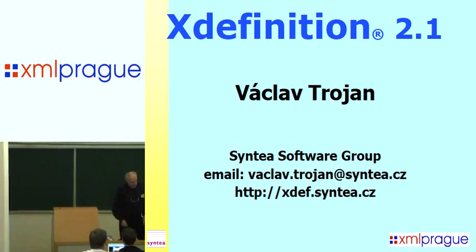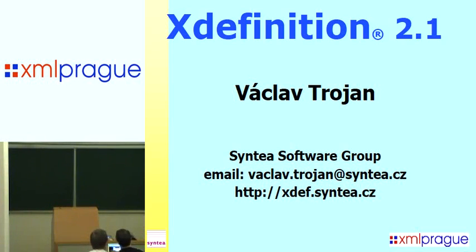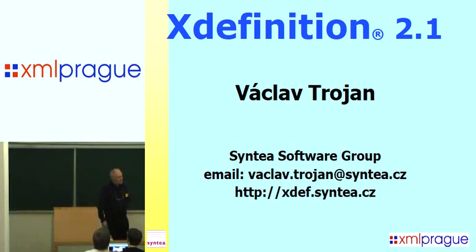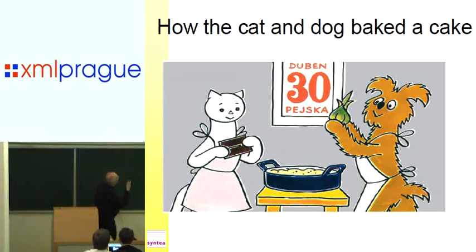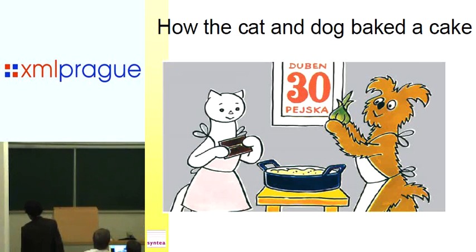Those two animals, cat and dog, decided to bake a cake and they expected that if each of them put in the best they liked, it would be nice for both. So the dog put in bones, the cat put in mice. You see the cat putting chocolate and the dog putting onion. When they baked it and started to eat it, they found it horrible. And I think that is the idea of X-definitions.